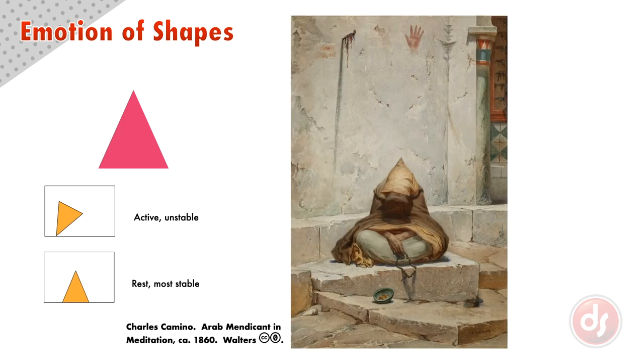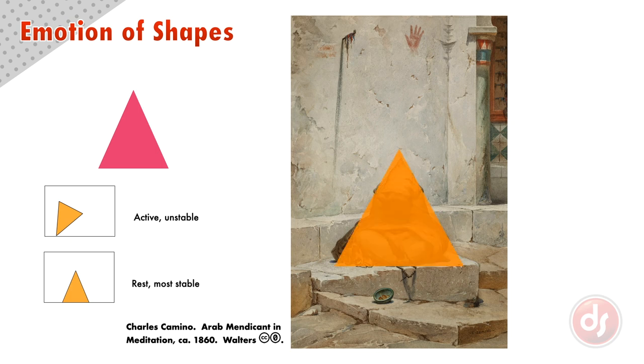Charles Camino designed his Arab Mendicant in Meditation as a triangle sitting on a flat surface low in the picture plane. The fact that the triangle is sitting on its base and is low in the picture plane adds to its stability, making it feel grounded, like gravity has already pushed it to the bottom. This makes the figure seem calm, balanced, and very stable.